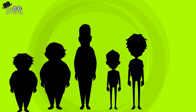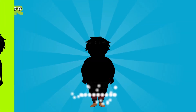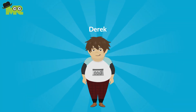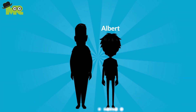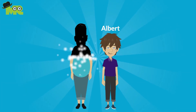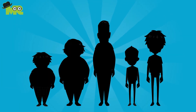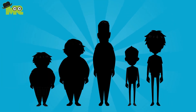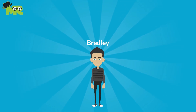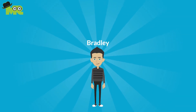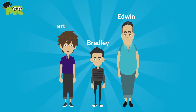All five brothers are compared in weight and height. The second heaviest boy, Derek, is the shortest of them all. Albert is the second tallest and shorter than Edwin. The heaviest boy is the third tallest boy. There is only one boy shorter than Bradley, and Bradley is lighter than Edwin and Albert respectively.